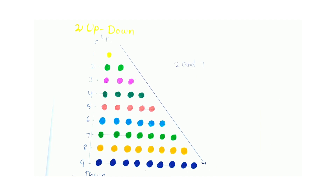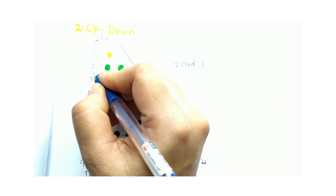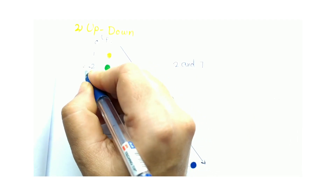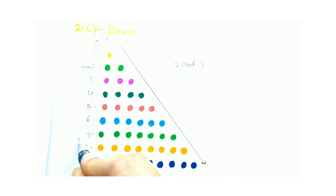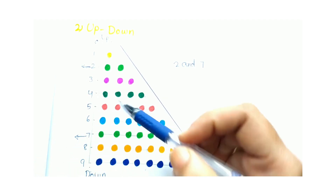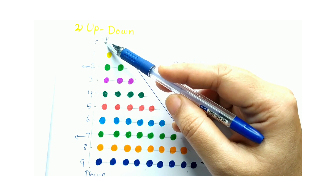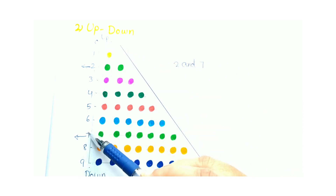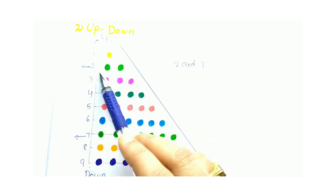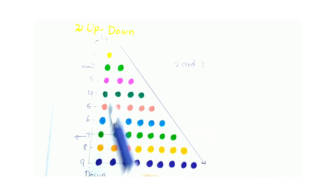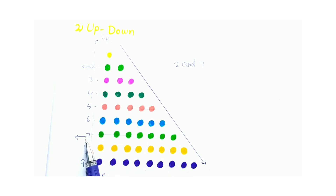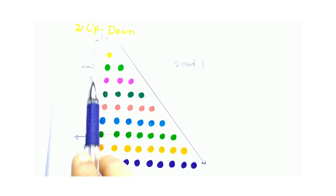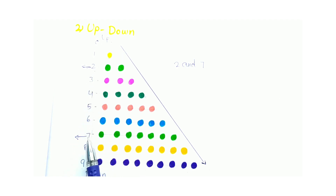Let us take 2 and 7. Where is 2? Here we have 2 and here we have 7. 2 is on the upside and 7 is on the downside. For 2 we are here, for 7 it is increased, so that number becomes the bigger number. 2 is the smaller number and 7 is the bigger number.